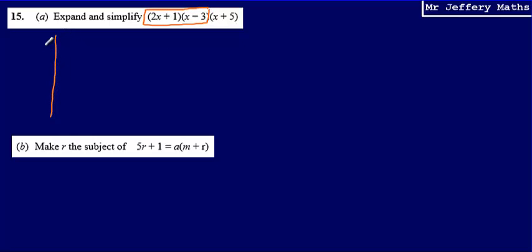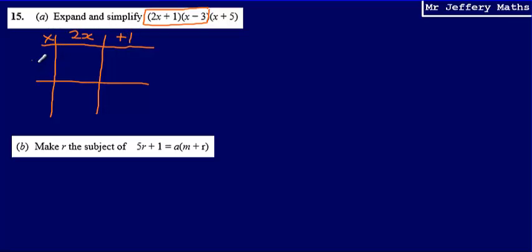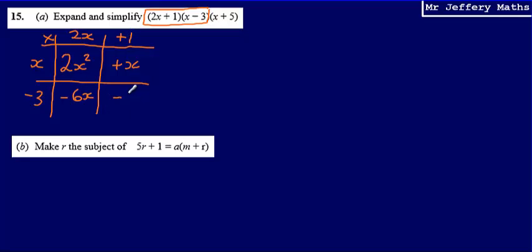The way that I like to do this is by setting out a grid. I'm going to multiply (2x + 1) by (x - 3). So x multiplied by 2x gives me 2x squared. x multiplied by 1 gives me x. Negative 3 multiplied by 2x gives me minus 6x. And then negative 3 multiplied by 1 gives me minus 3.